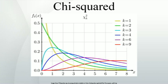Generalizations. The chi-squared distribution is obtained as the sum of the squares of k independent, zero-mean, unit-variance Gaussian random variables. Generalizations of this distribution can be obtained by summing the squares of other types of Gaussian random variables. Several such distributions are described below. Linear combination: if χᵢ² are chi-squared random variables, then a closed expression for the distribution of their linear combination is not known. However, there exists a computationally efficient algorithm to calculate the pdf to arbitrary precision.